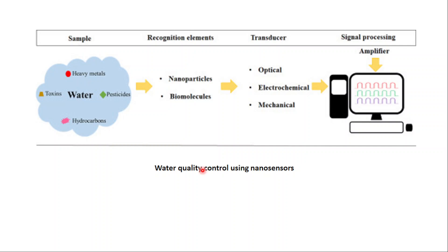Nanosensors are also applied in water purification systems. All three statements are true: statement one — carbon nanotubes and alumina material for water purification; statement two — zeolite membrane, nanocatalysts, and magnetic nanoparticles for water purification; statement three — nanosensors used in water purification. The answer is option A: all three statements are true. Students are responding positively. Let's move on to the next question.